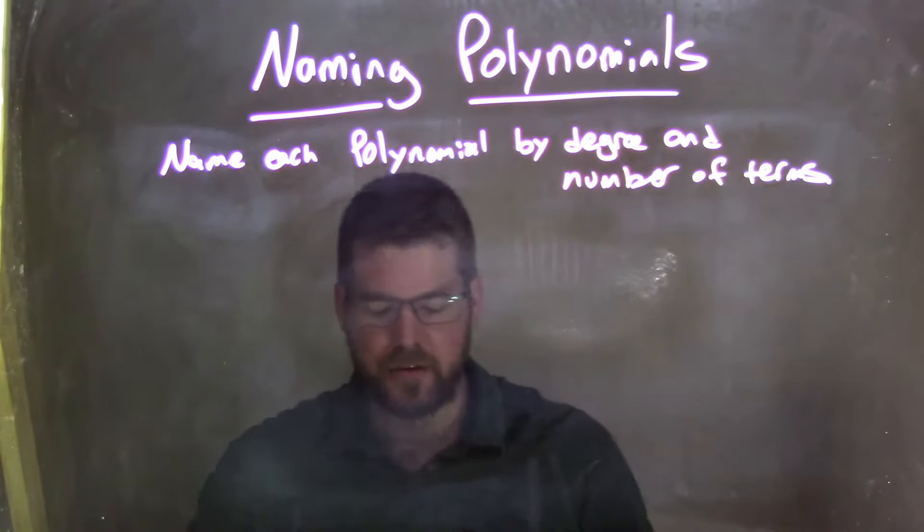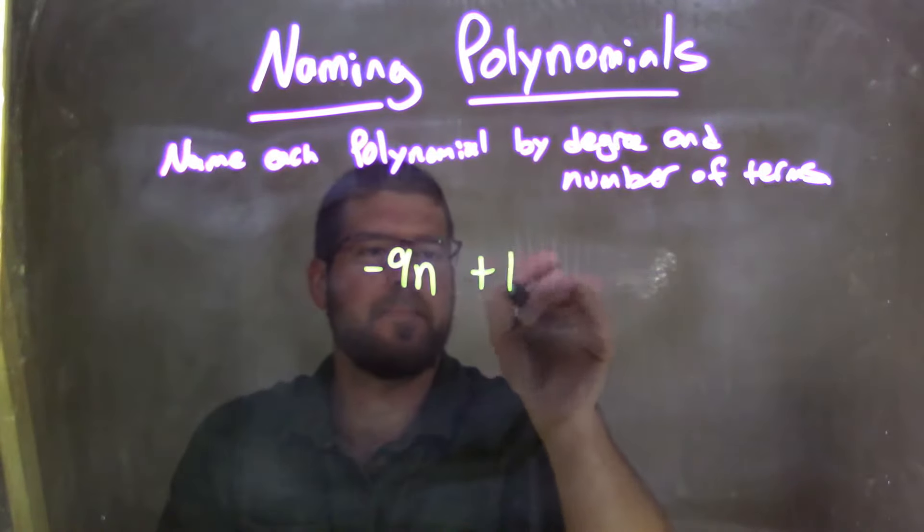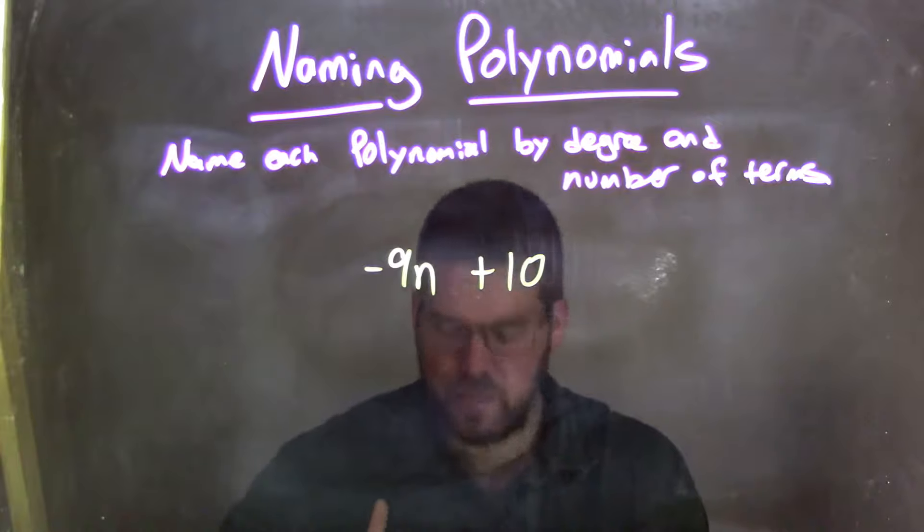So if I was given this polynomial: negative 9n plus 10.